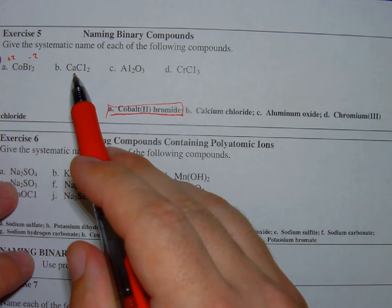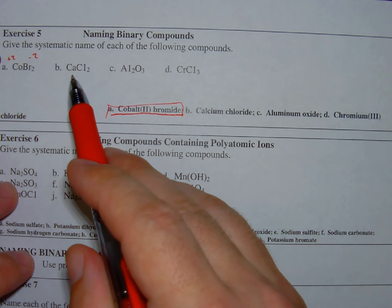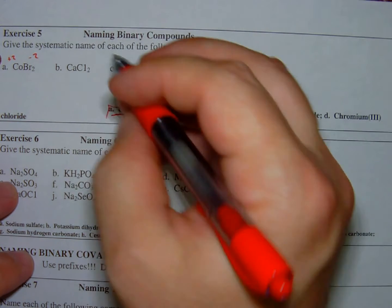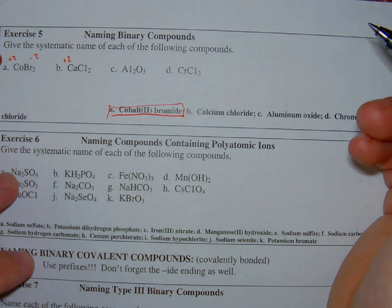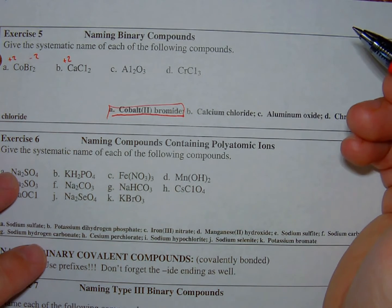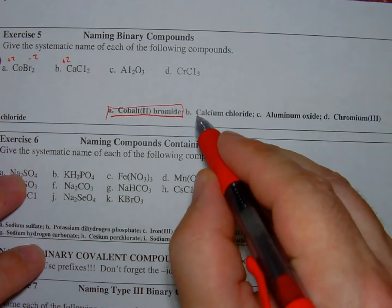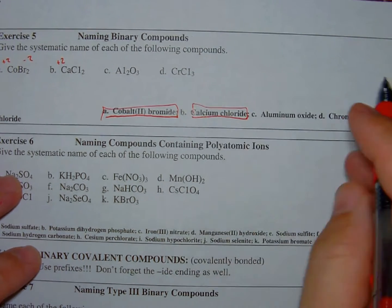B, this is calcium. Calcium is a representative metal. It's in the main group, in an A group. And so it's going to form a plus two always. There's no different charge on calcium. And so we just write calcium chloride. No Roman numeral.